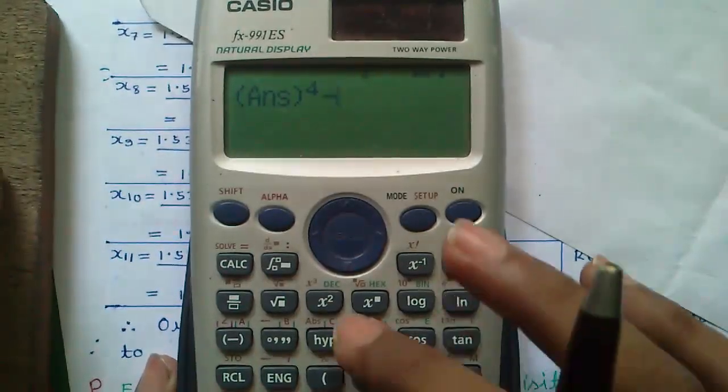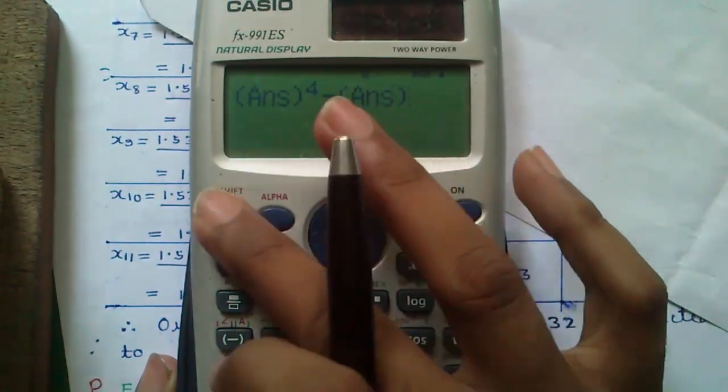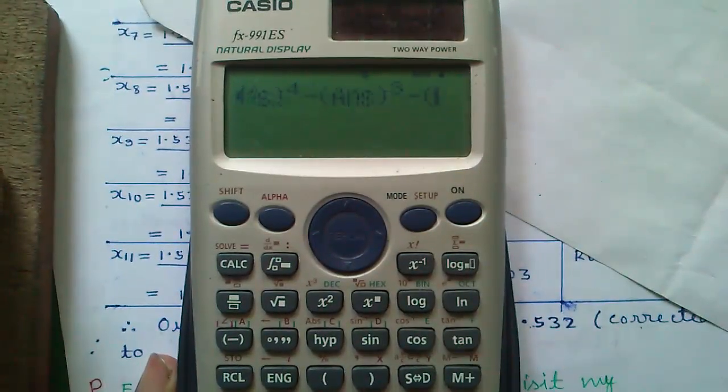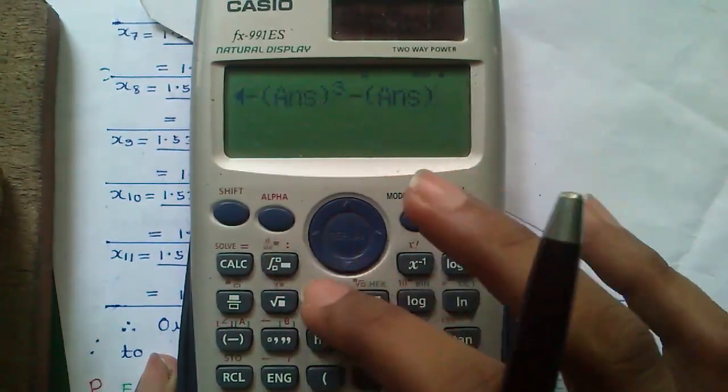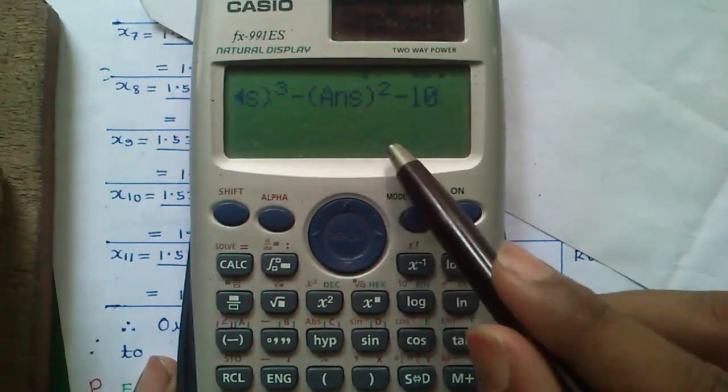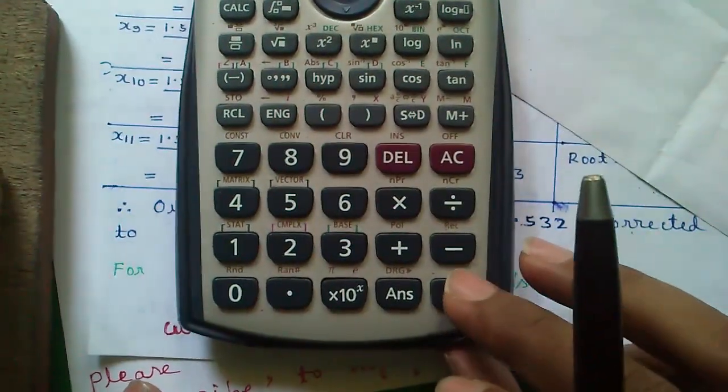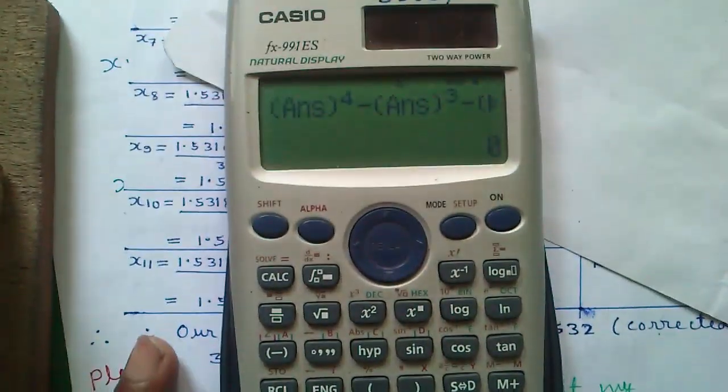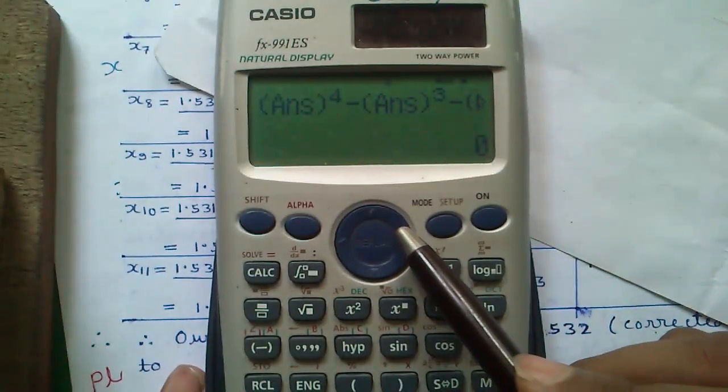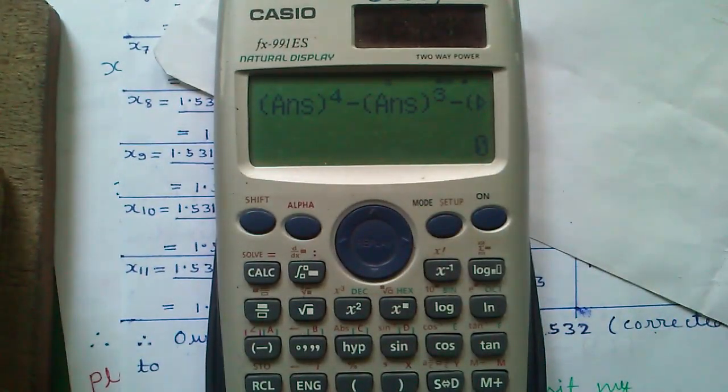To the power 4 minus answer cube minus answer square minus 10. So it should give us equals to 0. So press equals to. That is equals to 0. So our root is correct. Isn't it cool?